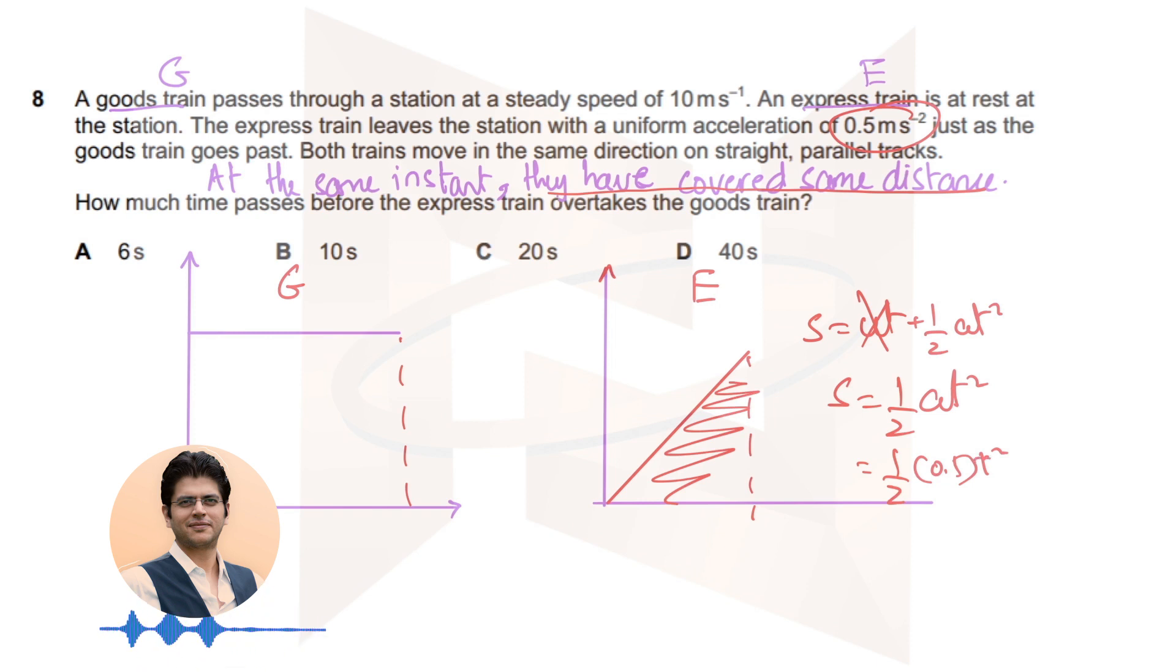On the other side, because you were traveling at a constant speed for the goods train, at that instant when you cross, you've traveled the same distance. So this area under the graph will be very simply 10 into t, this is the distance that you've traveled.